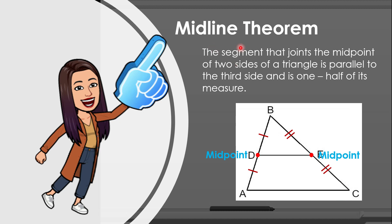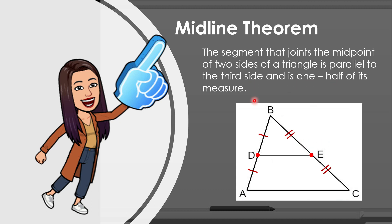From our midline theorem, it mentions that the segment joining the midpoints — when we say segment, it is the line here — is what we call a midline. The theorem states that the midline should be parallel to the third side, which here is AC. And the measure of the midline is one half the measure of the third side, so the midline is equal to one half of AC.